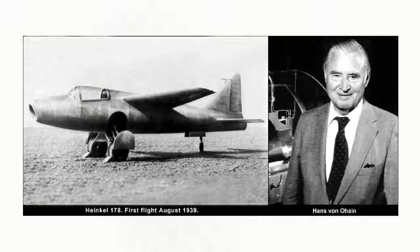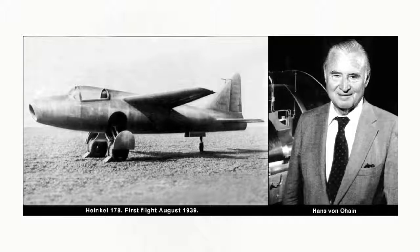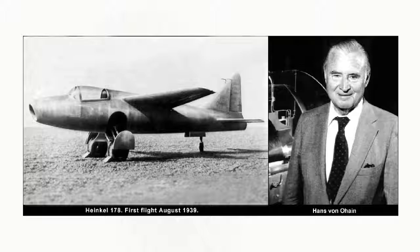Although the Italians were unaware of it, a year earlier than this the Germans had flown their version of a jet aircraft, the Heinkel 178. This aircraft was powered by an engine designed by a young German scientist called Hans von Ohain. Despite the relatively sparkling performance for that era — it could travel at speeds in excess of 400 miles per hour — the German Air Force initially paid it scant regard, and it was never produced in any quantity.